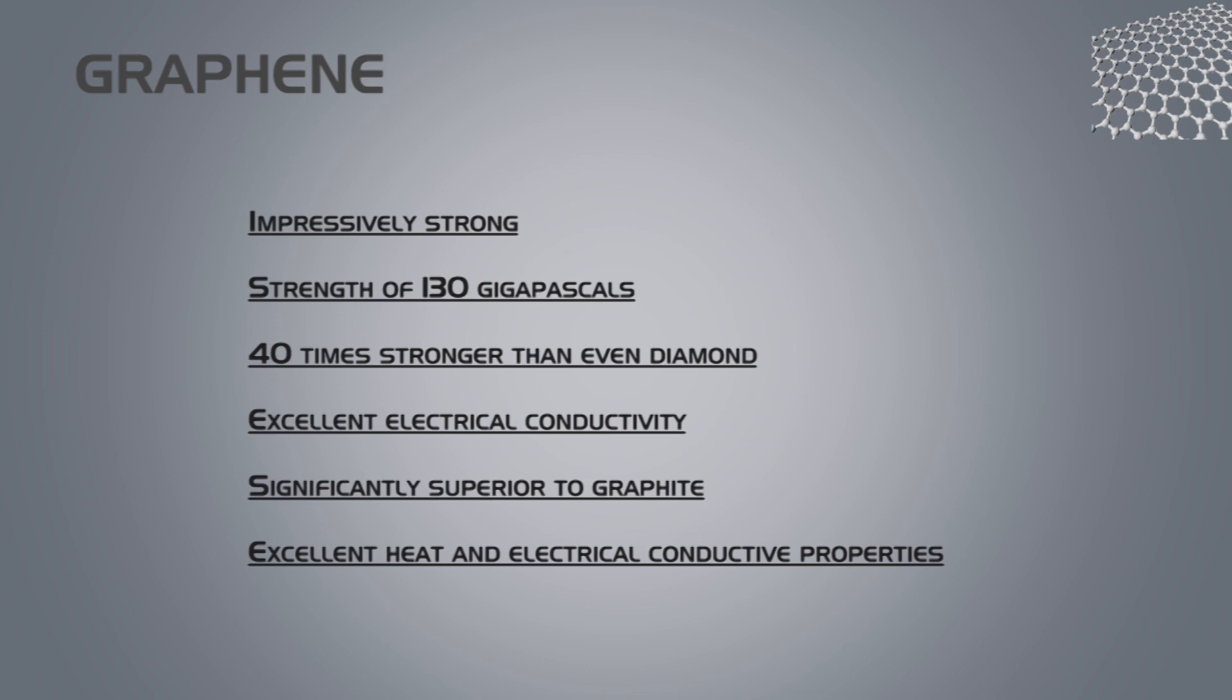Once graphene is isolated from its source mineral, it shows distinct properties. Graphene sheets are impressively strong, and the material is considered one of the strongest materials known to man. In comparison with structures made from standard A36 steel, graphene is immensely strong, with a strength of 130 gigapascals.